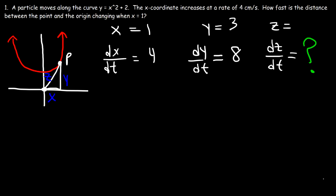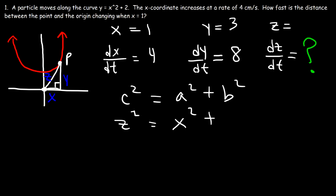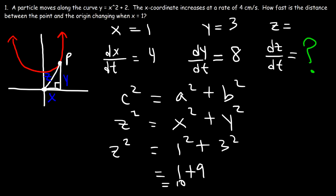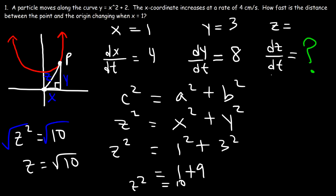Now we need to calculate z and dz/dt. We have this right triangle, so by the Pythagorean theorem, z squared equals x squared plus y squared. The hypotenuse is z. With x equal to 1 and y equal to 3: 1 squared plus 3 squared equals 1 plus 9, which is 10. So z squared equals 10, and taking the square root of both sides, z equals the square root of 10.